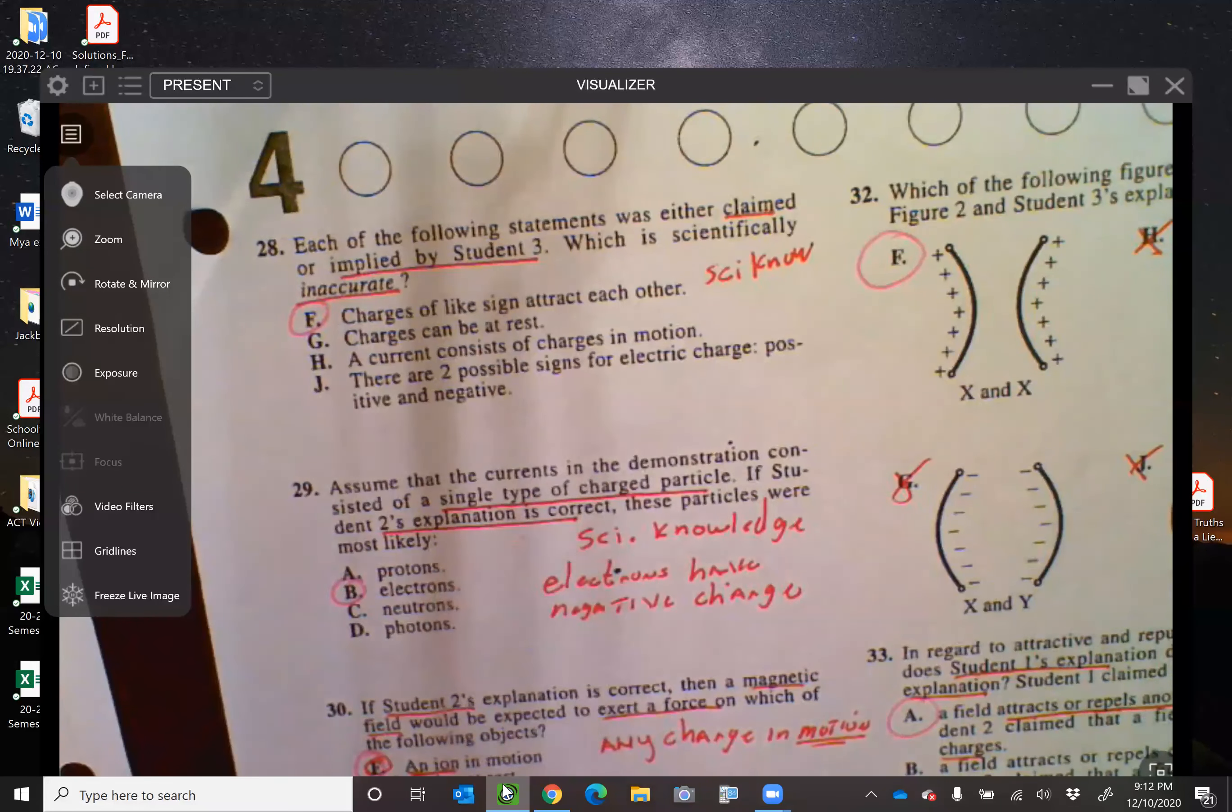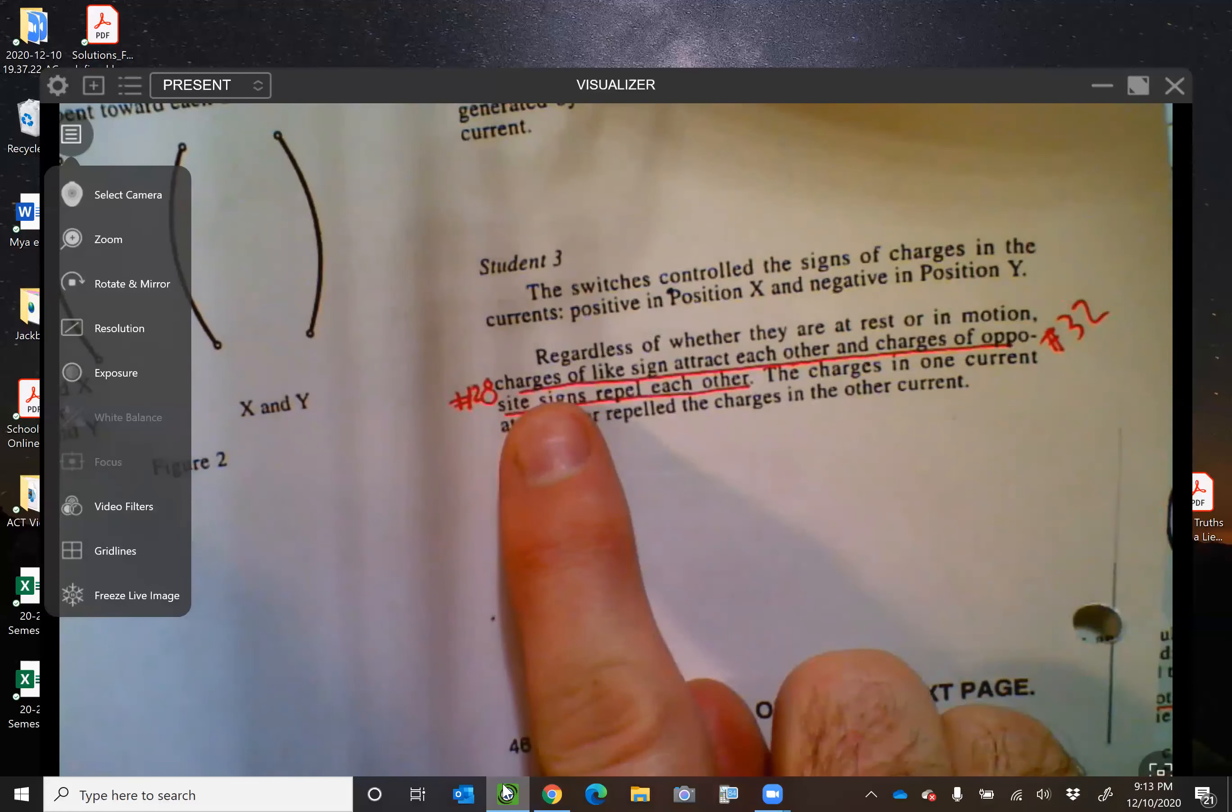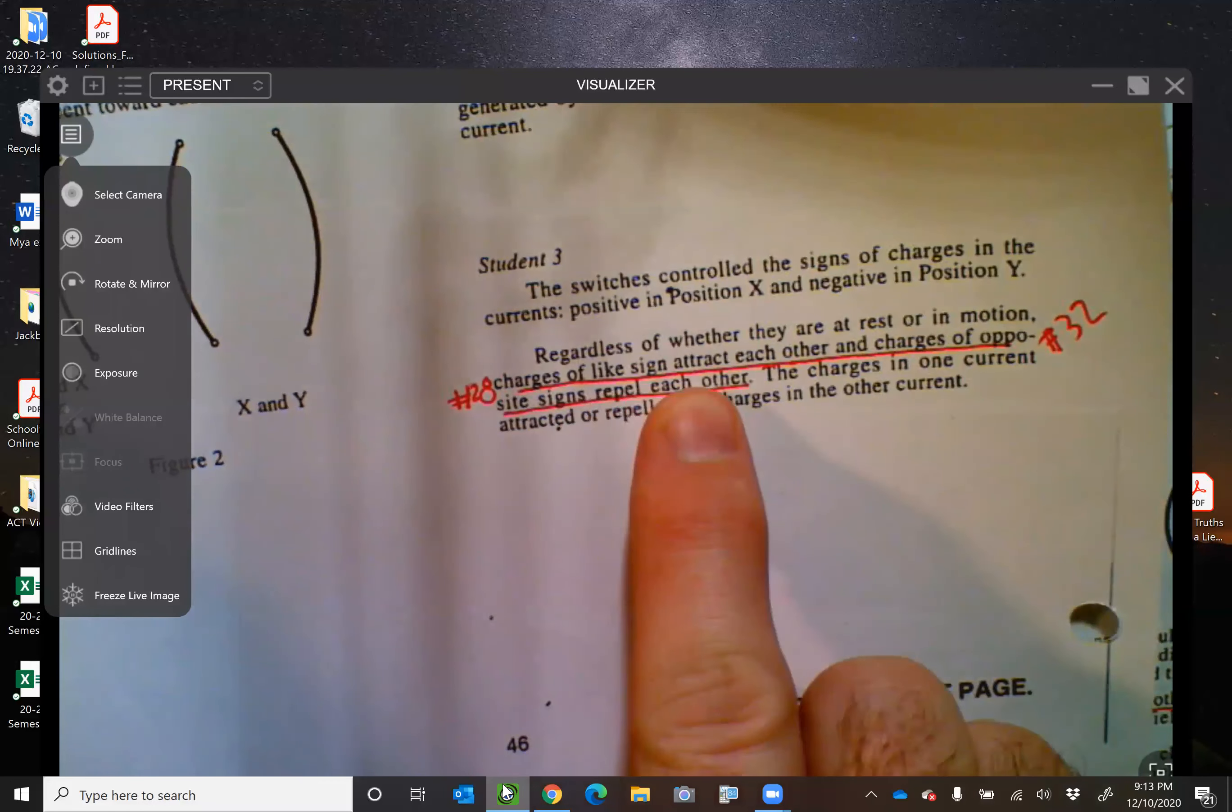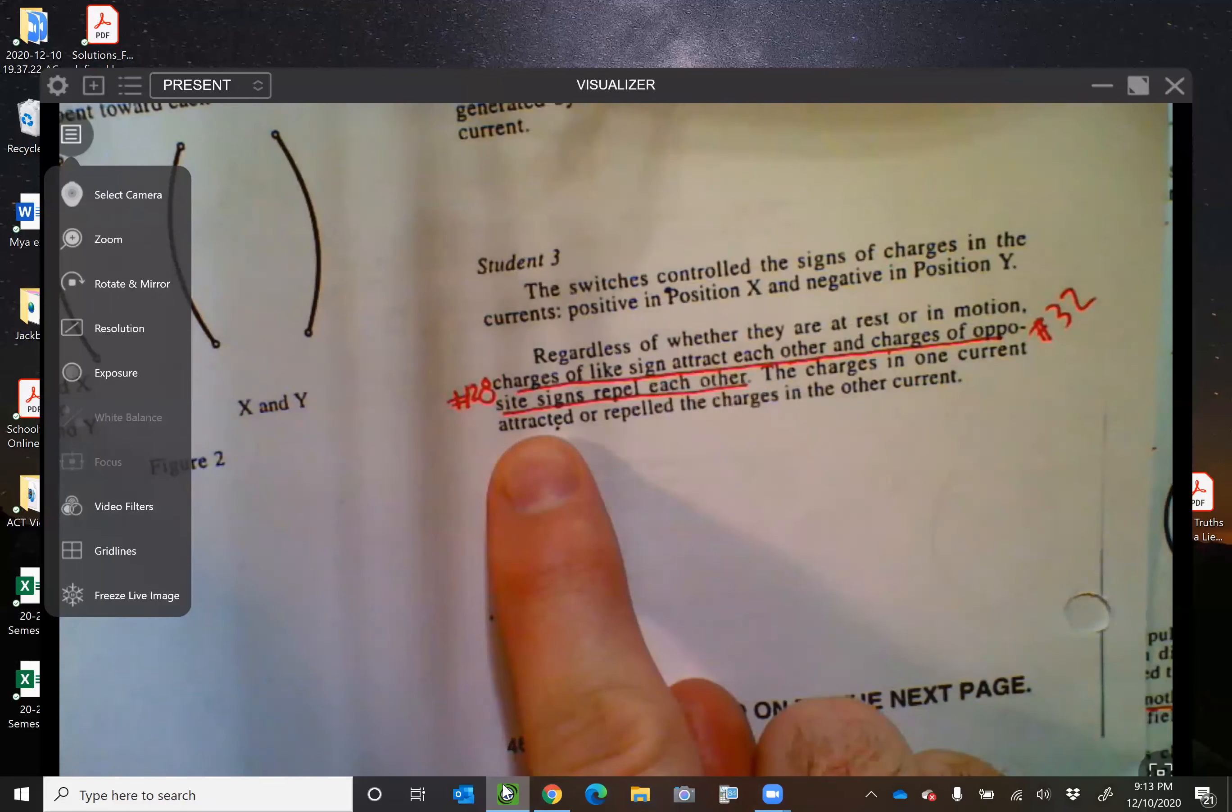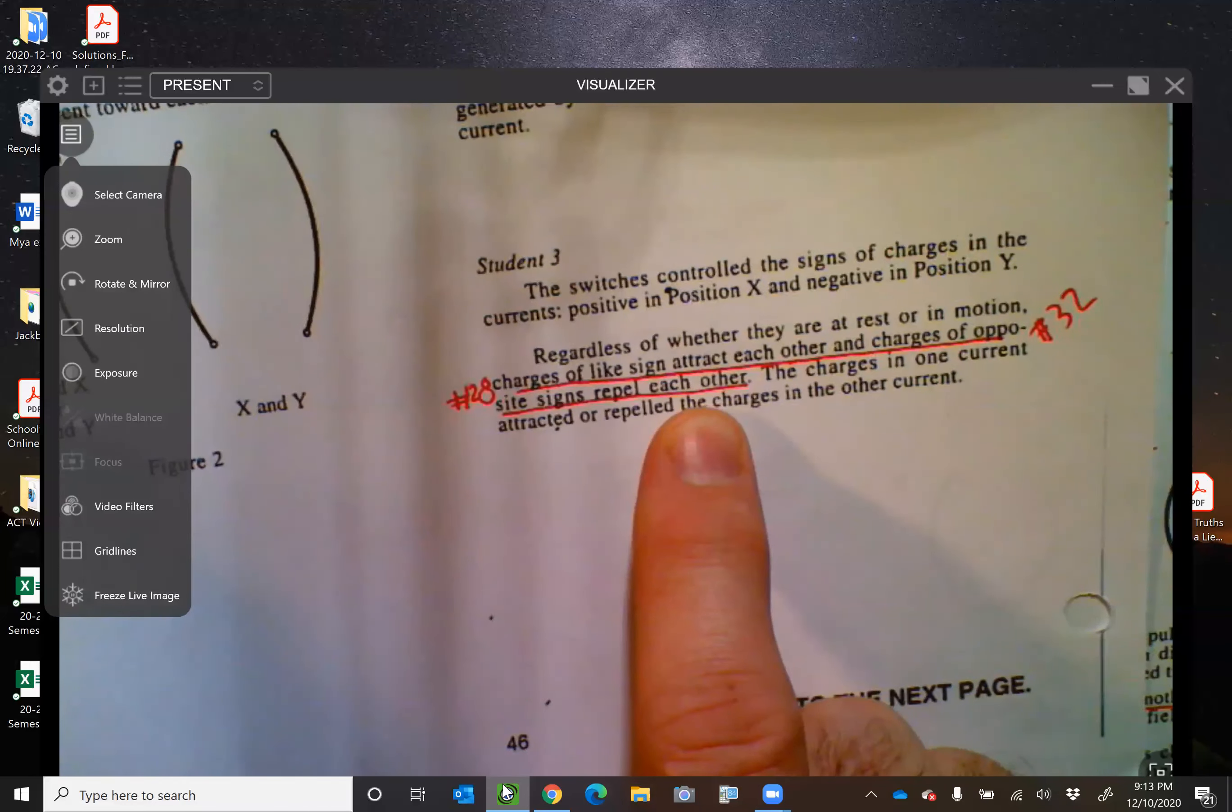Inaccurate. And it's because student number three says charges of like signs attract each other. I don't think so. I think a positive attracts a negative. If you're like signs, you repel each other, right? And we can actually see that right here. Student number three says right here, charges of like signs attract each other and opposite signs repel each other. This person's got it backwards.